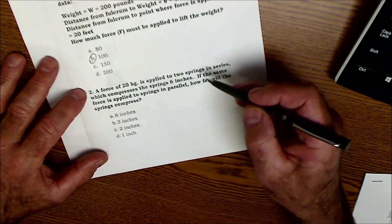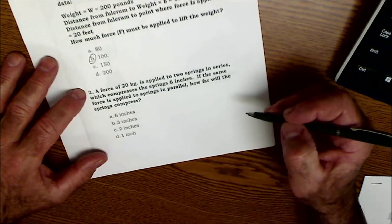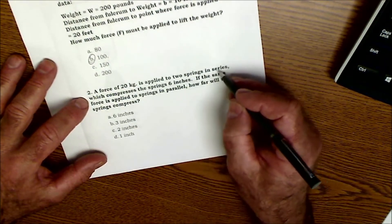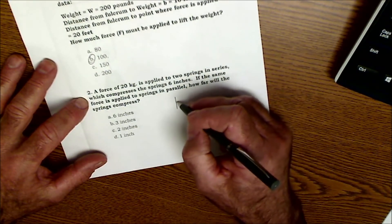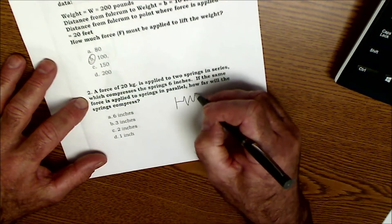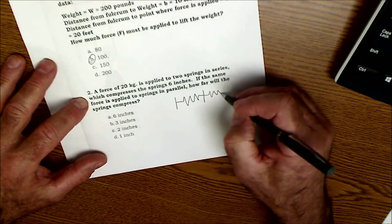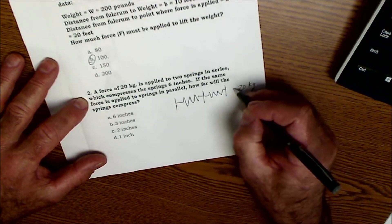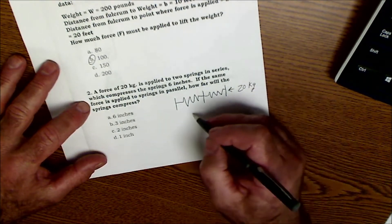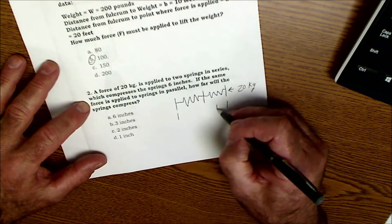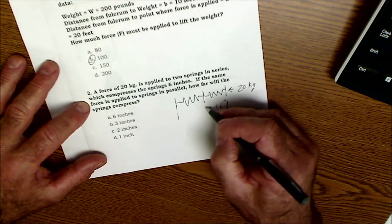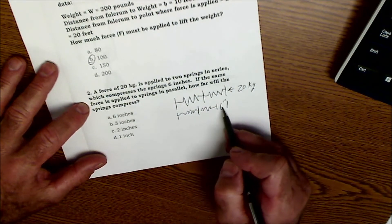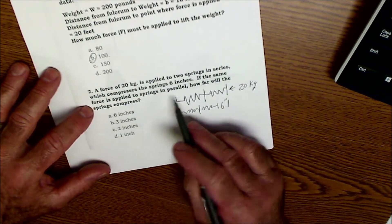Okay, number two, go ahead and pause it using my strategies, and then unpause it and watch me go through this problem. So number two, a force of 20 kilograms is applied to two springs in a series. So in a series is going to mean like this. So there's one spring, two springs in a series. 20 kilograms of force is getting exerted on the system like that, and it compresses six inches. So it goes in six inches, and now the springs are here, right? So it's going in three inches per spring, three inches for this one and three inches for this one.